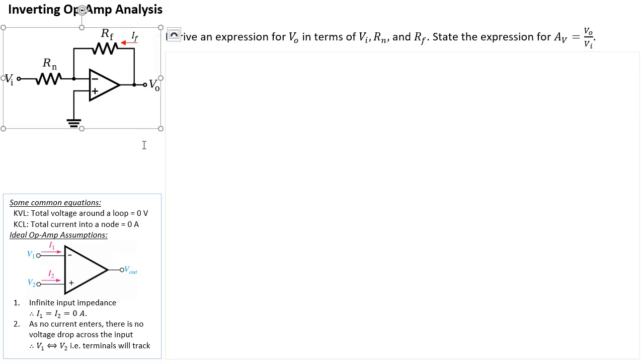So the first one I'm going to label is that current. It's the current that flows through RF from the right side to the left side. And of course, there'll be a voltage as a result across RF. So the positive is pointing to the right of RF.